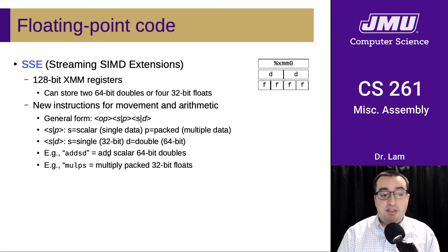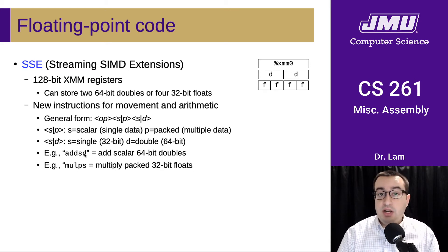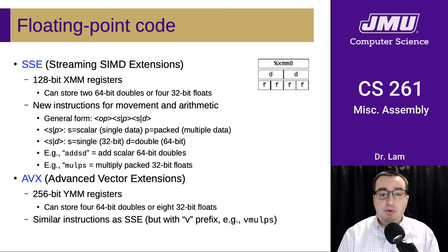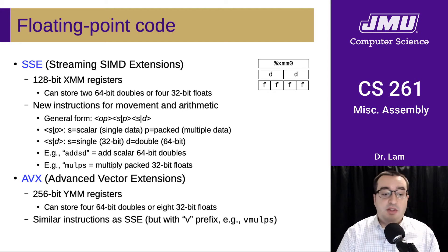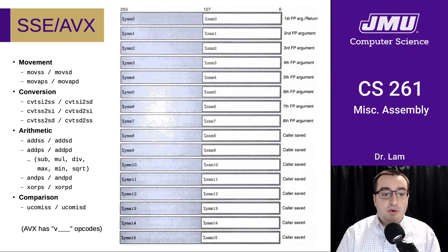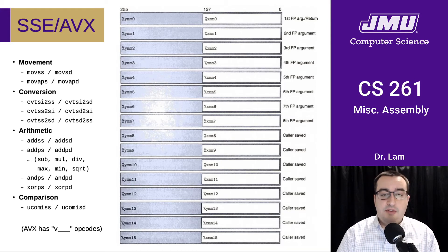For example, ADDSD means add scalar 64-bit doubles — one 64-bit operation. MULPS means multiply packed 32-bit floats — four 32-bit operations at once. AVX is a newer extension that boosts registers to 256 bits, doubling the register width, so you can store four doubles or up to eight floats. AVX instructions are named the same as SSE instructions except with a V prefix prepended.